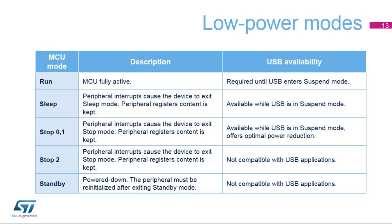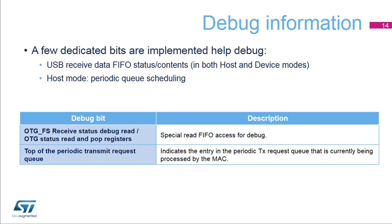The USB peripheral is fully active in run mode. After a suspend event, sleep mode and stop 0 and 1 modes are available and the contents of its registers are kept. Stop 2 and standby modes should not be used. Within the USB mode, dedicated bits are implemented to provide some debug functions for USB applications, relating to FIFO status and contents and the scheduling of periodic queues in host mode. Additional details of these debug bits are listed in this table.